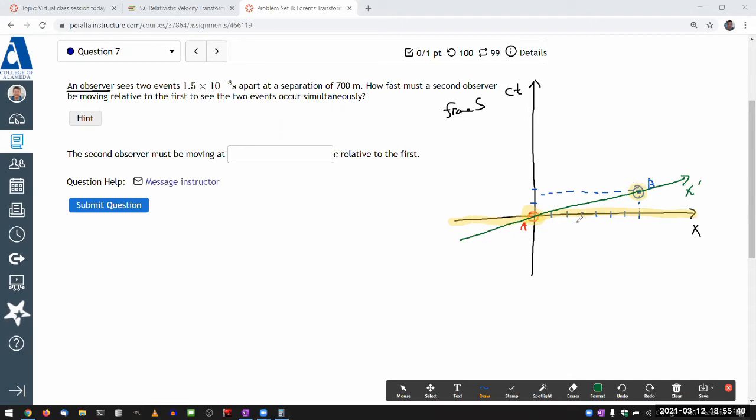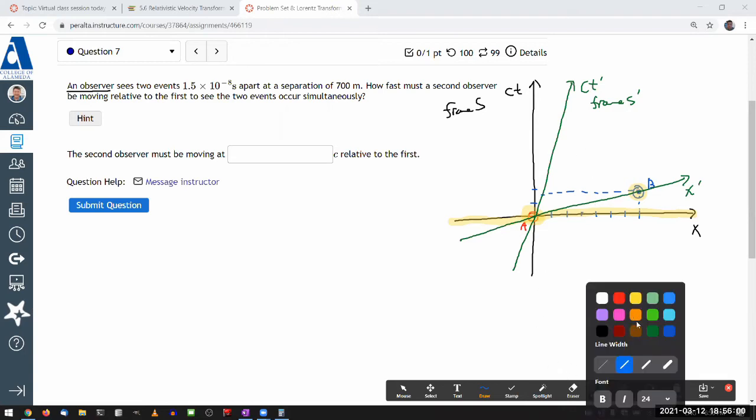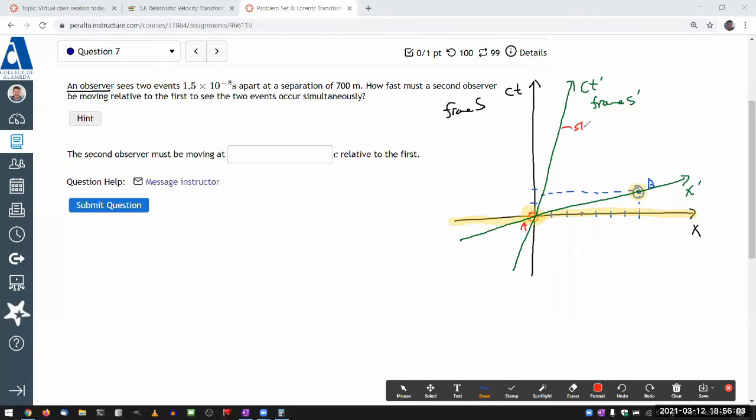So this is my CT prime axis for my frame S prime, and A and B are simultaneous in this reference frame. And if you remember things about Lorentz transformation and drawing over space-time diagram, I've pointed out this before, how the slope of this line is 1 over beta, and slope of this line is equal to beta. Beta representing the V over C, where V is the speed of the reference frames, or speed of the second observer.